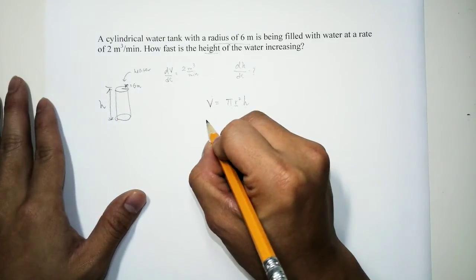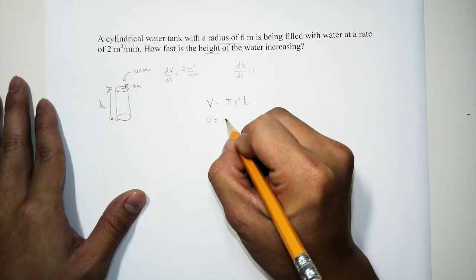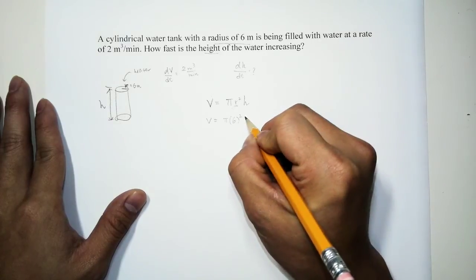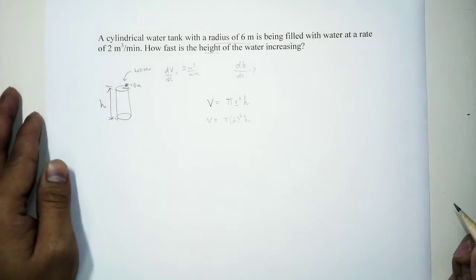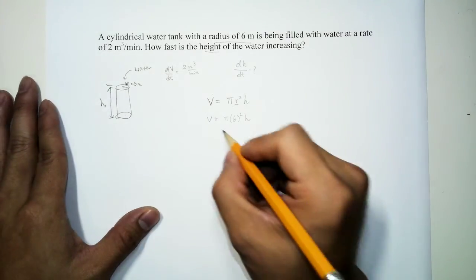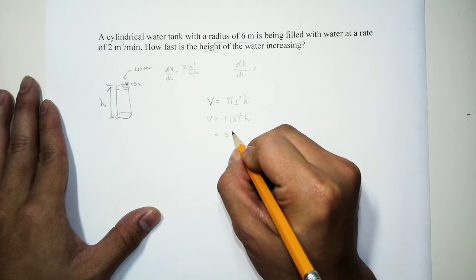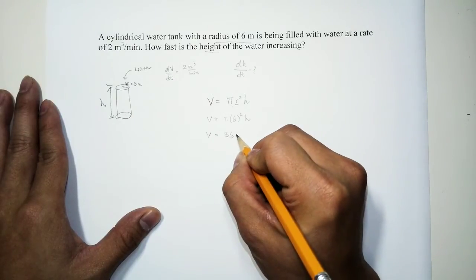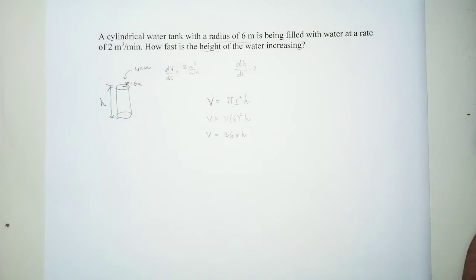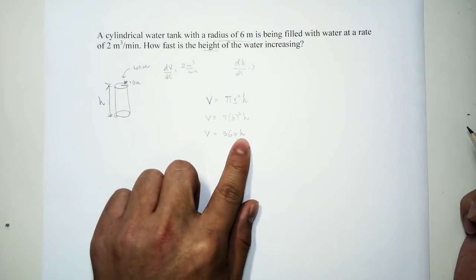So we're going to transform this equation into V is equal to π 6² h. Okay, π 6² h. And so it's essentially V is equal to 36π h. Now how many variables do we have here? We have V and h.